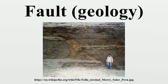The vector of slip can be qualitatively assessed by studying any drag-folding of strata, which may be visible on either side of the fault. The direction and magnitude of heave and throw can be measured only by finding common intersection points on either side of the fault. In practice, it is usually only possible to find the slip direction of faults and an approximation of the heave and throw vector.